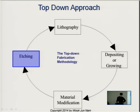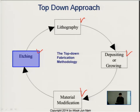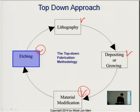There are four basic processes for the top-down approaches: lithography, deposition or growing, material modification — which includes modifying the surface, doping the materials, and similar processes — and etching, which is one of the techniques we need to use for the top-down approach.